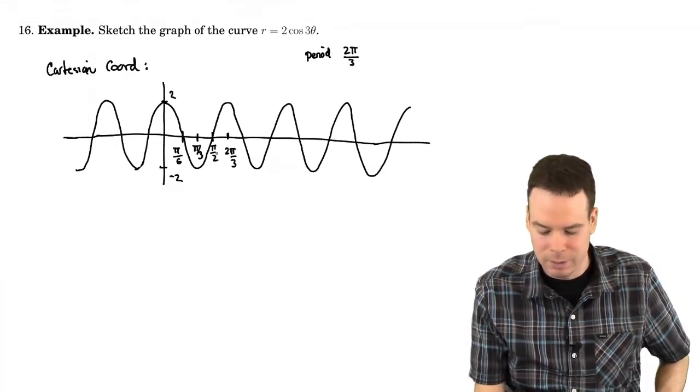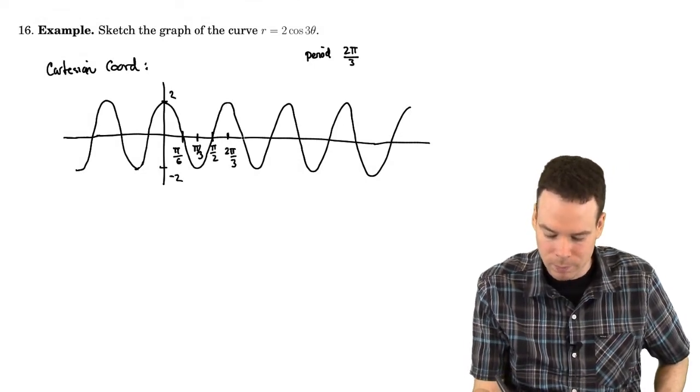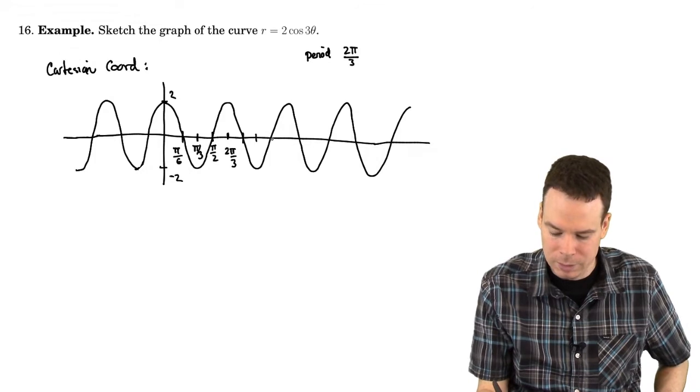And then another π by 6 later, which is 4π by 6, or in other words 2π by 3, is where it caps out. And then we keep going, adding π by 6 each time.